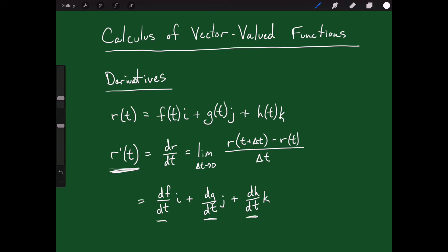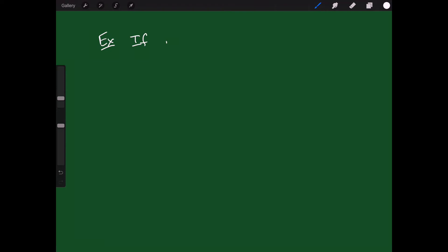It boils down to taking three derivatives: one for the x direction, one for the y direction, and one for the z direction. For a quick example to show how this works, if r of t equals t cubed i minus t squared j plus sine of t k, then find r prime of t.